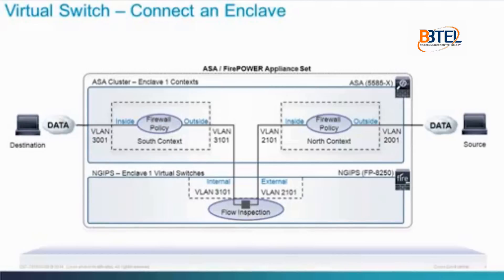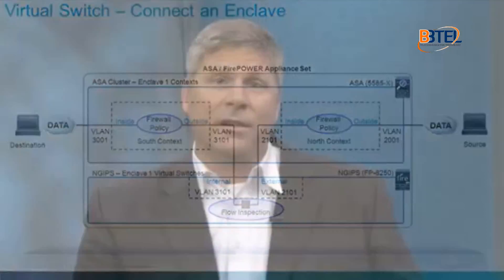The VLANs are connected from the ASA to the Firepower appliance across the port channel using sub-interfaces. In our validation, we used two 10-gig links for this port channel to connect the devices, which matched the scale and capacity we wanted for the design. On the Firepower appliance, a virtual switch is configured for each enclave and interface, as the appliance does not yet support port channels at this time. As customers need to scale — in other words, add additional zones or enclaves —